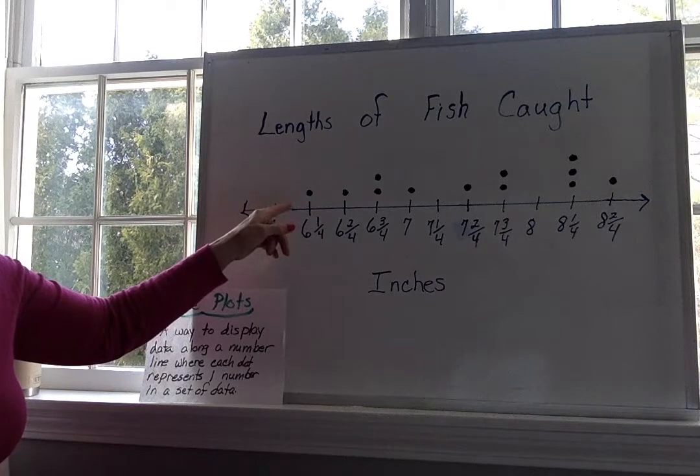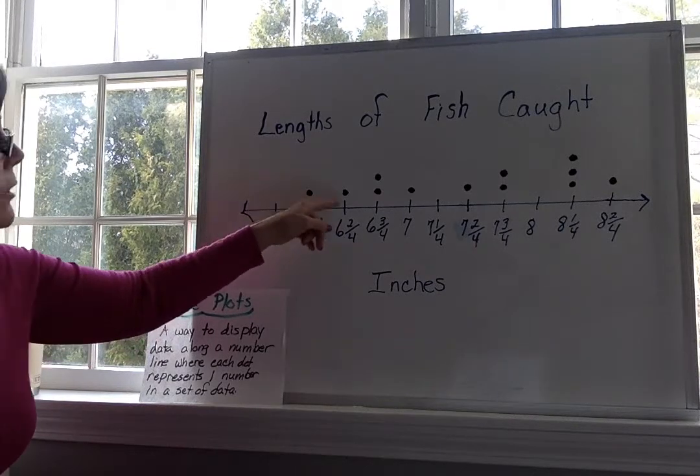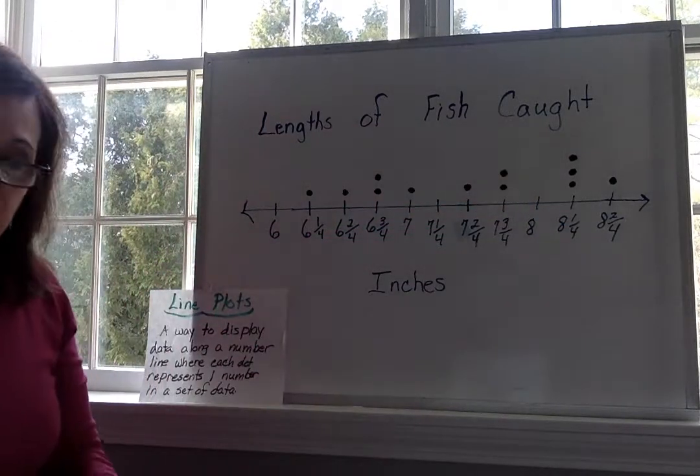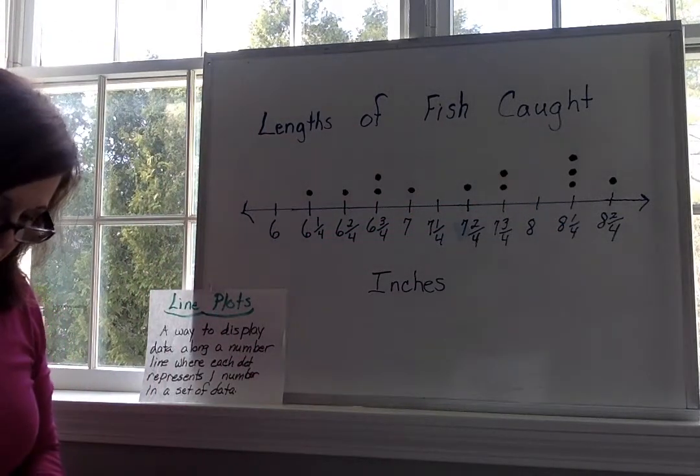And how do we know we've represented twelve fish? Well, when you've got all your dots put up there, if you count, one, two, three, four, five, six, seven, eight, nine, ten, eleven, twelve. We've represented all twelve of our fish.